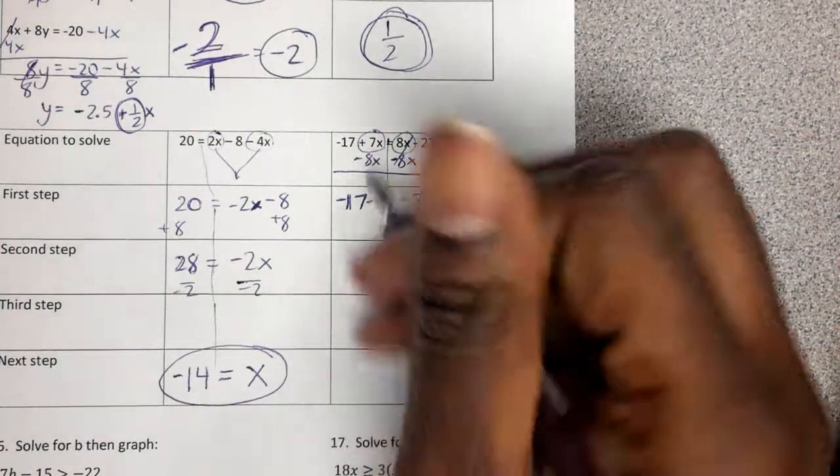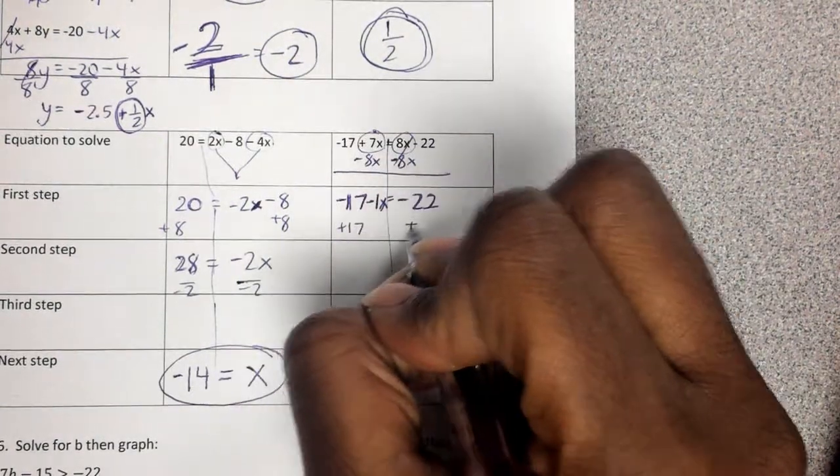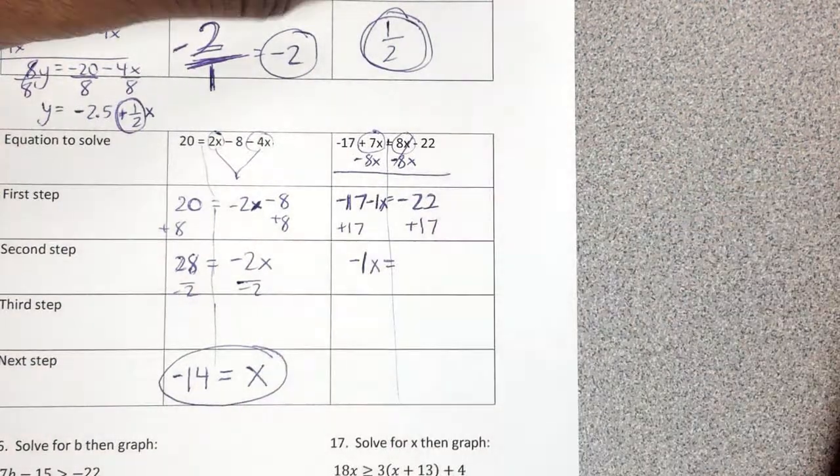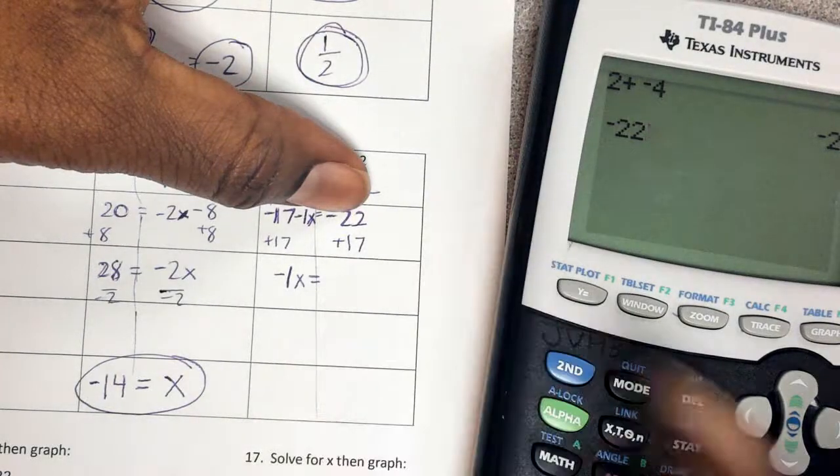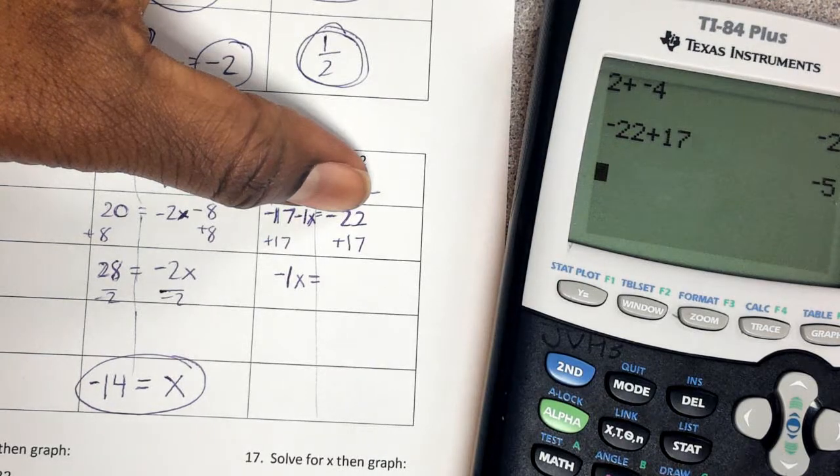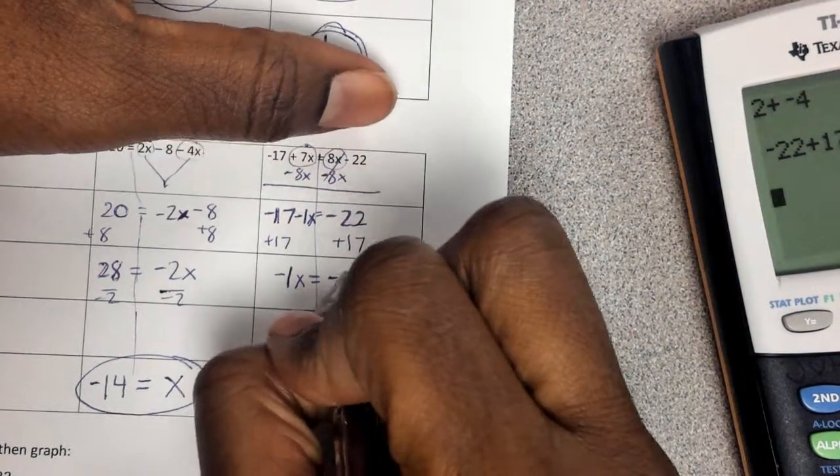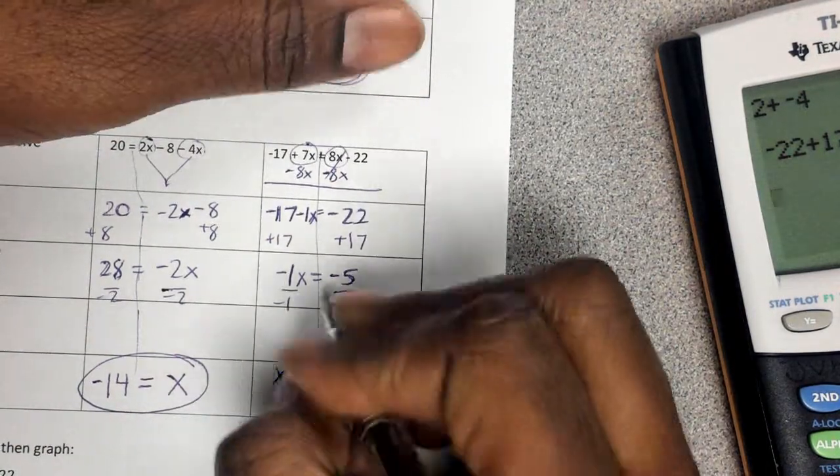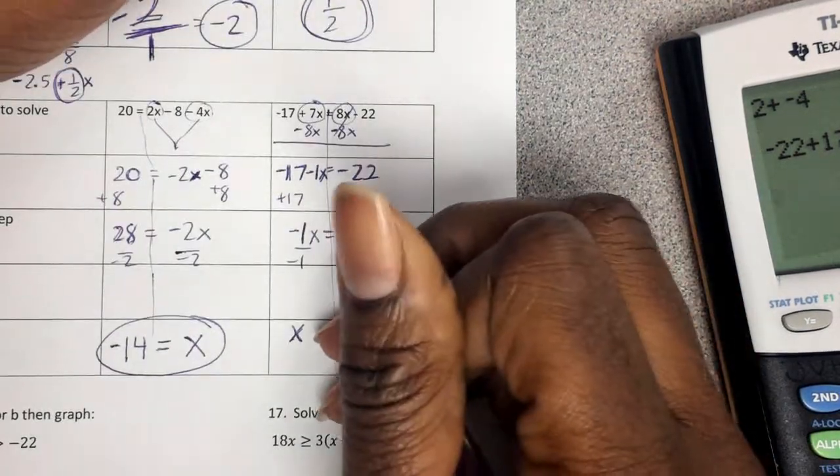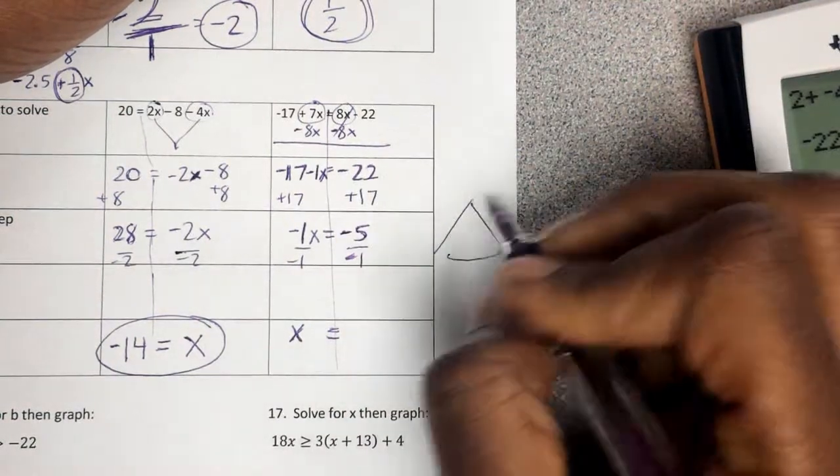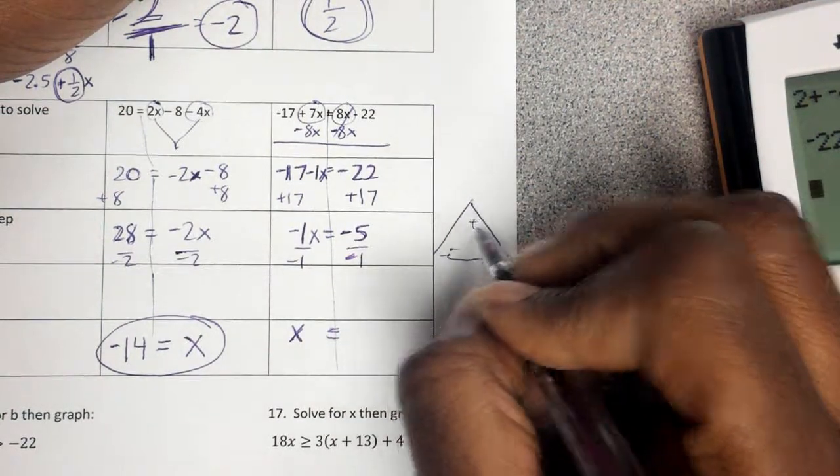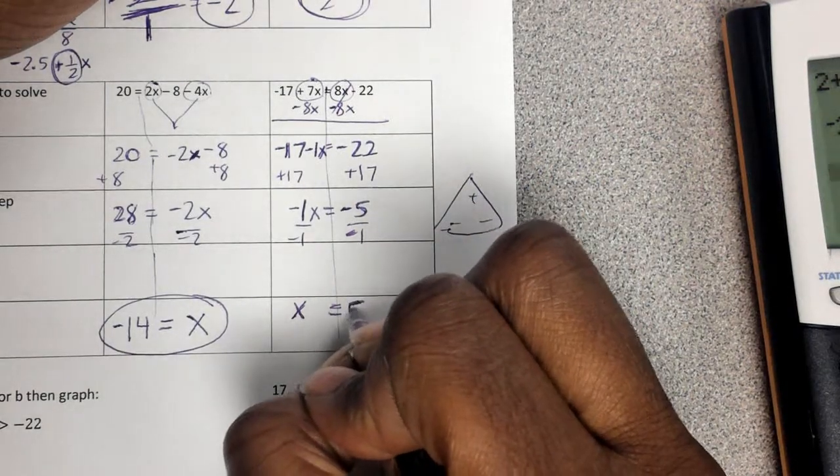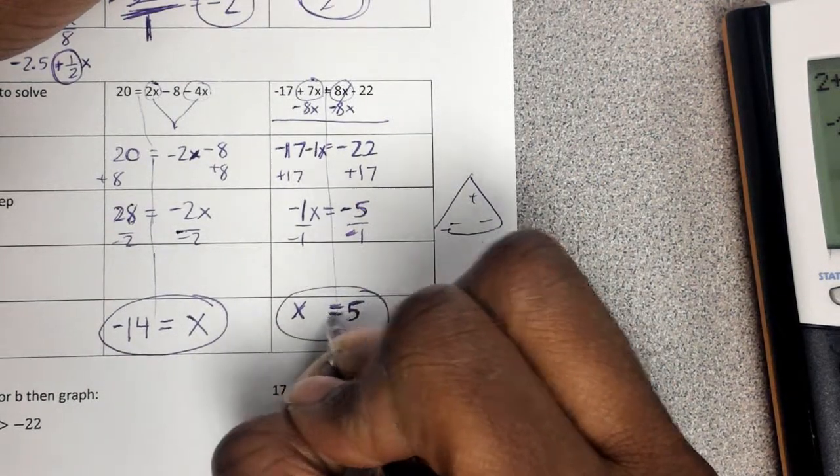So my first step would be negative 17. This one ended up being, if I do 7 plus a negative 8, that's negative 1x. That cancels out. And be careful because this 22 is negative 22. Be careful. I almost crossed it out when I was circling. So now I'm trying to get the x by itself. Add 17 over here. So I have a negative 1x equals. Let's figure out what negative 22 plus 17 is. Negative 5. So we got negative 5. Now the last step. Divide both sides by negative 1. x equals negative divided by a negative. Remember Dorito Man. x equals 5.